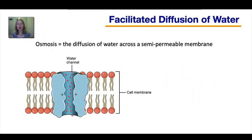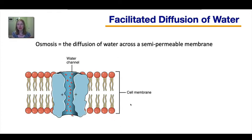Now let's revisit osmosis from a previous lesson. Osmosis is the diffusion of water across a semi-permeable membrane. If that membrane is an artificial membrane, water molecules can diffuse across simply by moving through the little pores. But in a real cell membrane, water molecules are small but polar, which means they have a rough time moving directly between the phospholipids through simple diffusion.